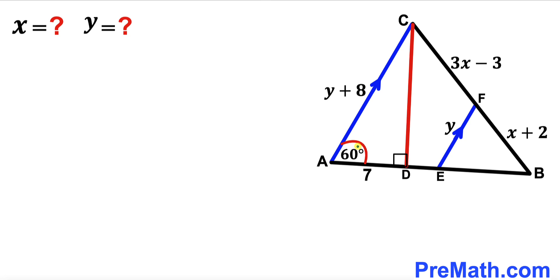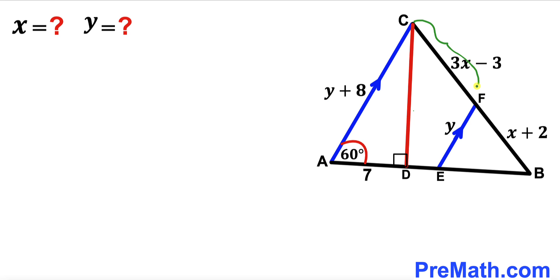Welcome to PreMath. In this video we have triangle ABC along with perpendicular segment CD, such that angle CAD is 60 degrees and segment AD is 7 units. Sides AC and EF are parallel to each other, represented by Y plus 8 and Y respectively. Segment CF is 3X minus 3 and segment BF is X plus 2. Our task is to find the values of X and Y.